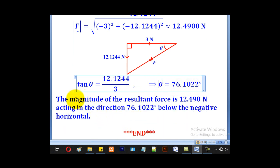However, we shall now conclude that our magnitude of the resultant is 12.490 Newtons acting in the direction 76.1022 below the negative horizontal.